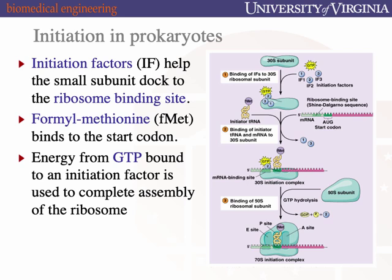All translation starts with methionine — this is true. In prokaryotes, it starts with a special modified form called formyl methionine (fMet). This is relevant to PAMPs and innate immunity. fMet is absolutely essential for prokaryotic translation to initiate. Many of these initiation factors are GTP-binding and GTP-hydrolyzing proteins, and the energetics released from GTP hydrolysis give rise to conformational changes in those initiation factors or the ribosome itself that start translation.